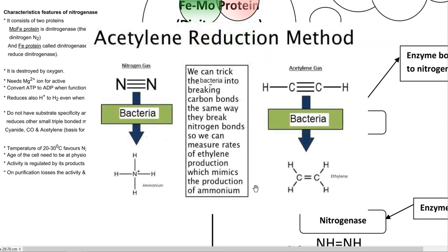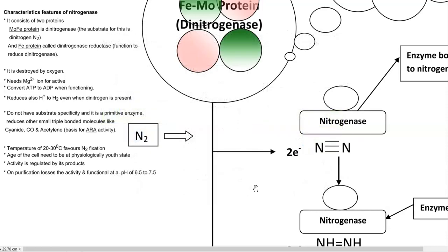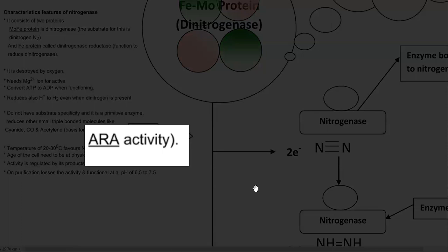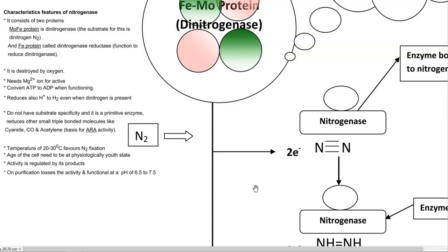Based on the reduction of acetylene gas, in the field of agriculture, to quantify the amount of nitrogen fixed by an organism, the acetylene reduction assay, or ARA activity, is used. The temperature for the functioning of this enzyme is around 20 to 30 degrees centigrade. Cells that can fix high amounts of nitrogen are in the physiological youth state, meaning the logarithmic phase. The enzyme's activity is regulated by its own products; if ammonia is present in excess, nitrogenase activity is reduced — a feedback inhibition by ammonia. On purification, the enzyme loses activity, and it functions mainly in the pH range of 6.5 to 7.5.